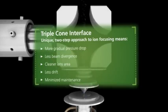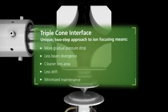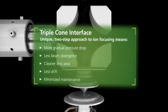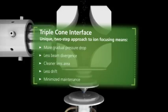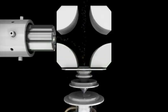Together, the triple-cone interface and quadrupole ion deflector eliminate the need for routine operator maintenance inside the vacuum chamber and prevent the universal cell from ever requiring cleaning or replacement.